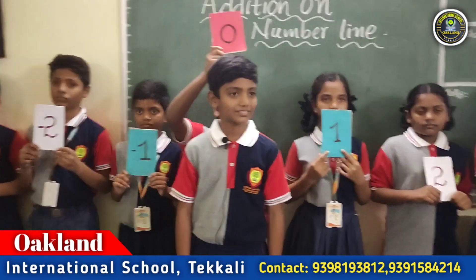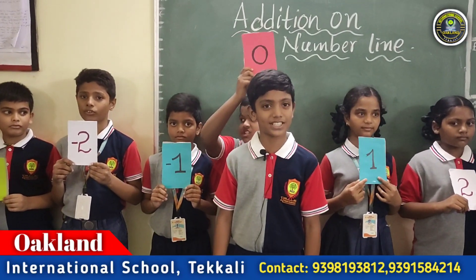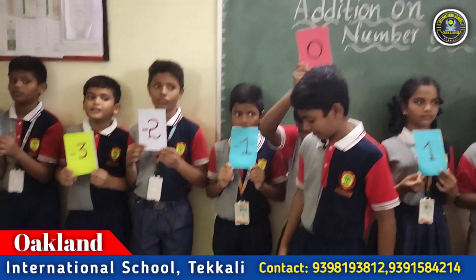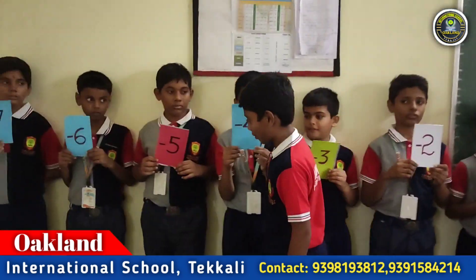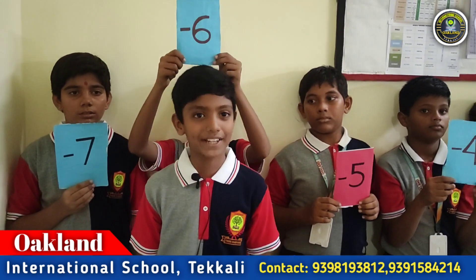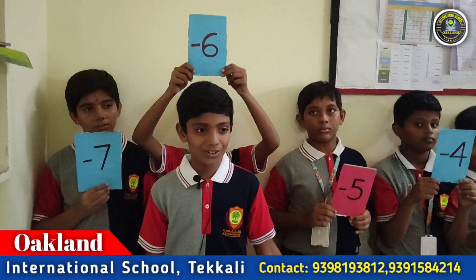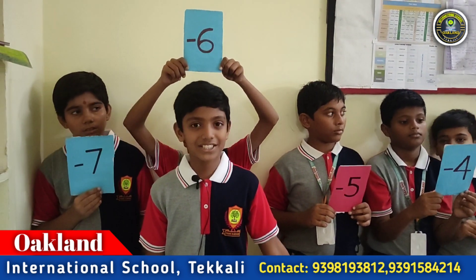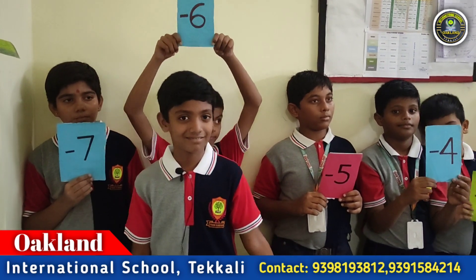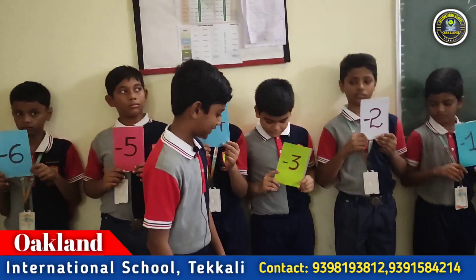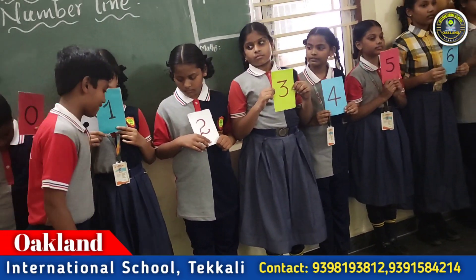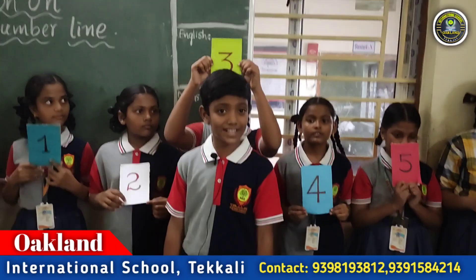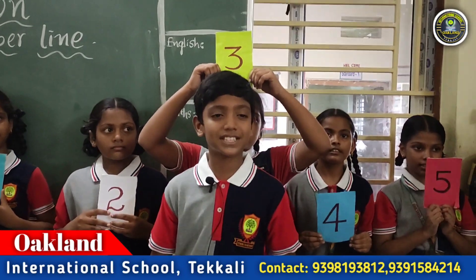Finally, your question is minus six plus nine. Where I am standing, that is zero position. To reach minus six — left side, six steps on the number line. One, two, three, four, five, six. Now I am reaching minus six. Plus nine is a positive integer — nine steps right side on the number line. One, two, three, four, five, six, seven, eight, nine. Minus six plus nine is equal to plus three.